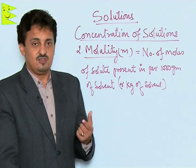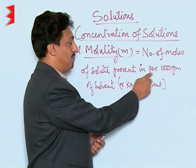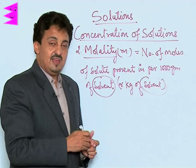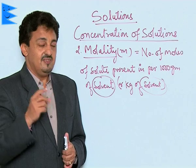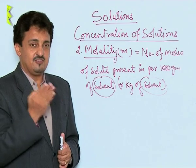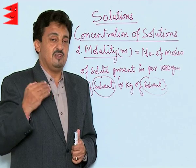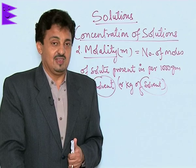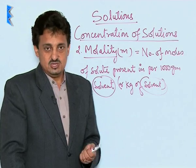Molality is the only term in the whole of chemistry where, in the context of a solution, the solvent is considered as the base. It is the number of moles of solute present per 1000 grams or per kg of the solvent. Since we are taking the solvent in terms of its mass, it is not going to change with temperature. That is why molality has a higher advantage than molarity. Whenever we have solutions in which we need to change the temperature, we express their concentration in terms of molality, not molarity.